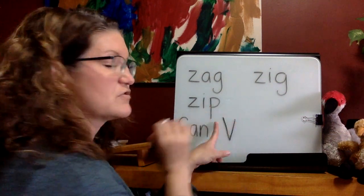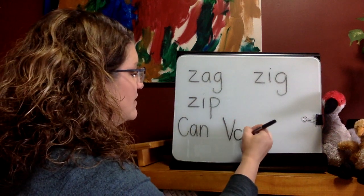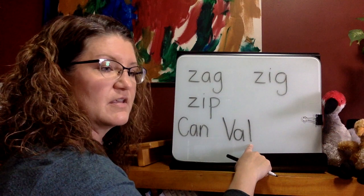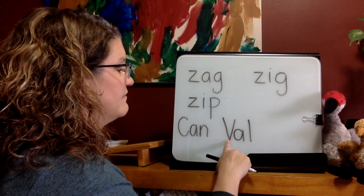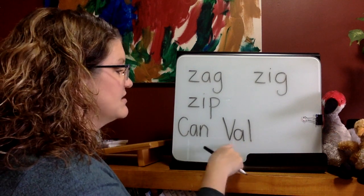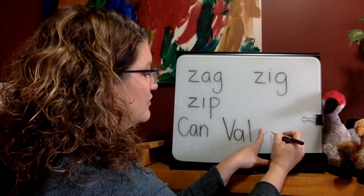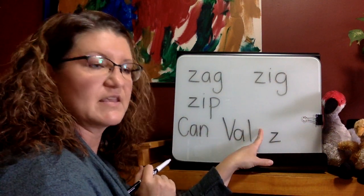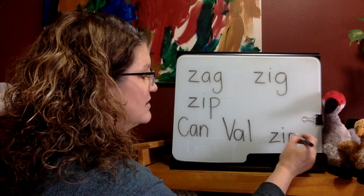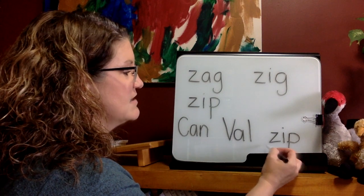Next word has a capital — that means it's going to be a name. Sound — V. Sound — yes, A. Sound — yes, L. Blend — 'Vowel.' So we have a person in our sentence. Their name is Vowel. Can Vowel — finger space before the next word. Sound — yes, Z. Sound — yes, I. Sound — yes, P. Blend — 'zip.' Read our sentence so far: Can Vowel zip.